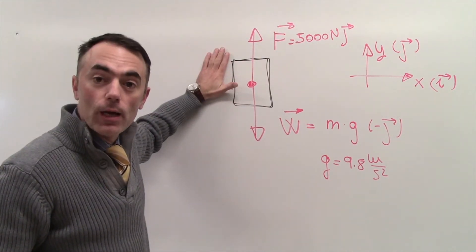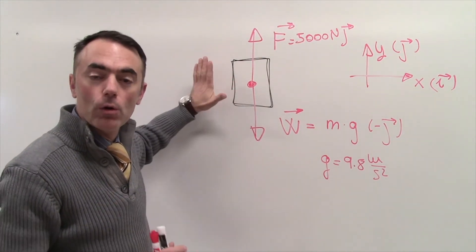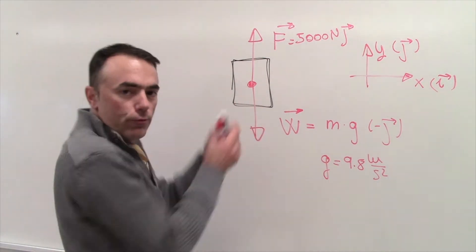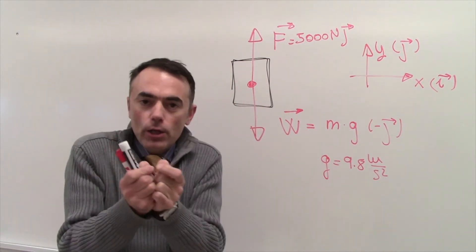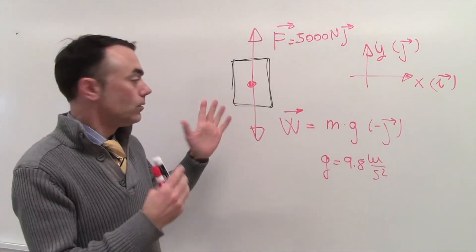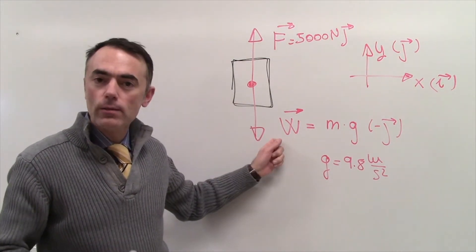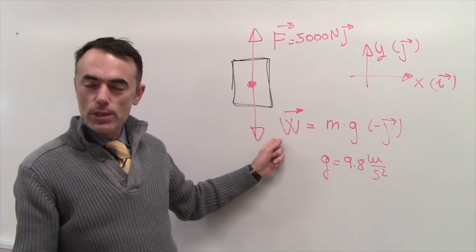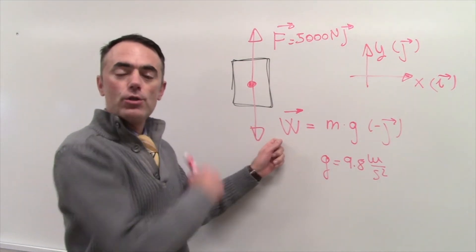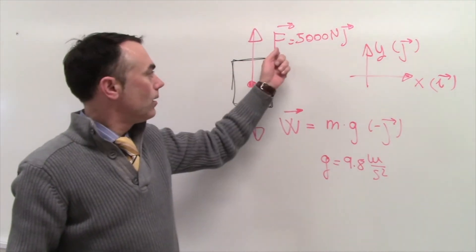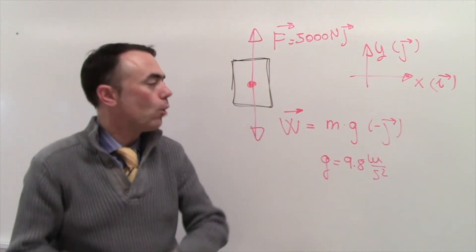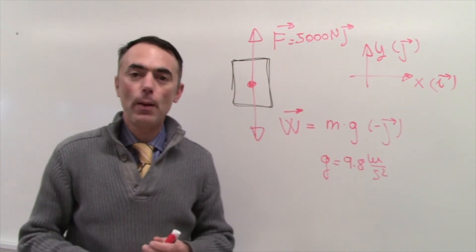This is the free body diagram. It includes all external forces — not the internal forces between the molecules of the elevator's structure, but only the external forces: the weight due to Earth pulling the elevator down, and the tension force from the rope pulling it up.